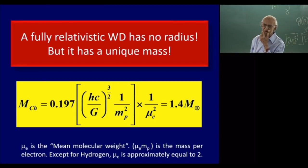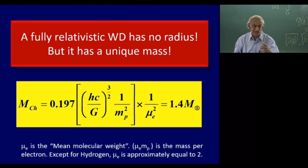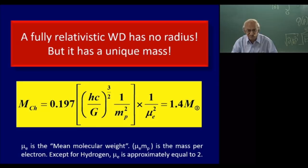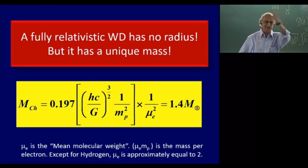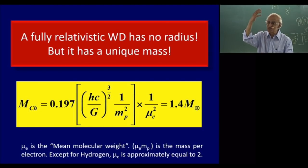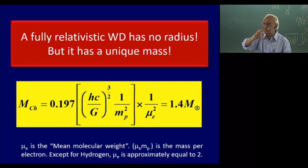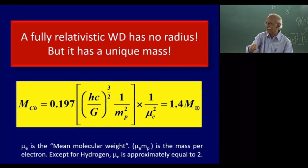So what is this mass? This is the mass of an ultra-relativistic star — it has no radius, but it has a mass. That mass is determined by the combination of fundamental constants, all measured in the laboratory — no astronomical input goes into this formula. Our physicists, knowing only the laws of physics and constants measured in the laboratory, are able to predict uniquely what the mass of such a star ought to be: 1.4 solar masses, and nothing else.